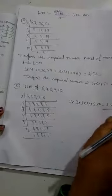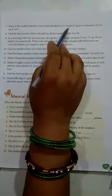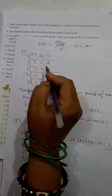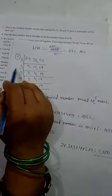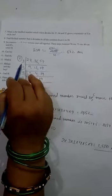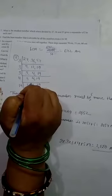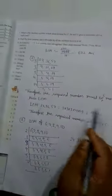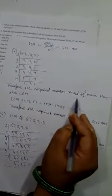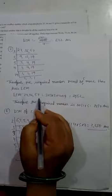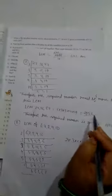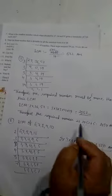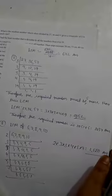What is the smallest number which divided by 27, 36 and 57 gives a remainder of 5 in each case? We need to find the LCM of the numbers which are divisible. The required number must be 5 more than the LCM. LCM of 27, 36, 57 is 2052. We will add 5, so 2052 plus 5 equals 2057. We will get answer.